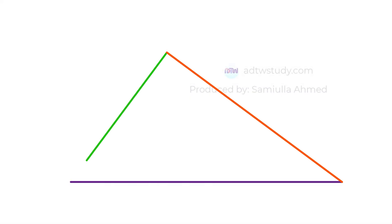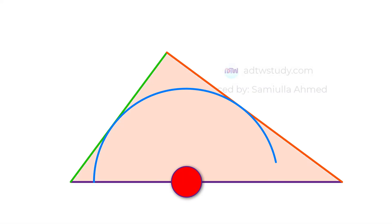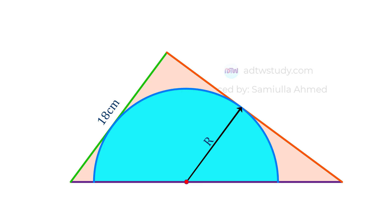Hello everyone, let's figure out how to find the radius of the circle. Here we have a triangle with sides 18 centimeters, 24 centimeters, and 30 centimeters. Inside there is a semicircle drawn in such a way that its circumference touches the two sides of the triangle. Our task is to find the radius of the circle.